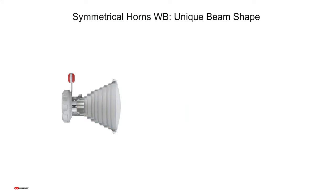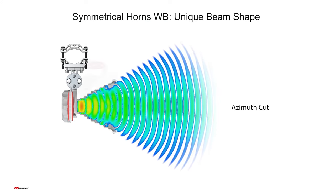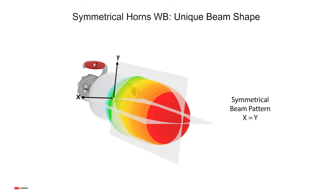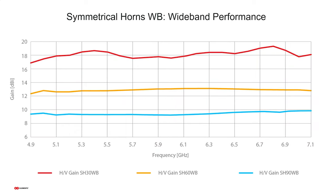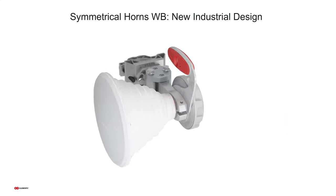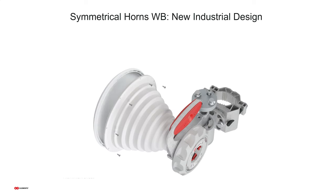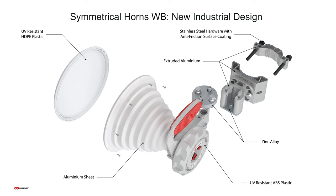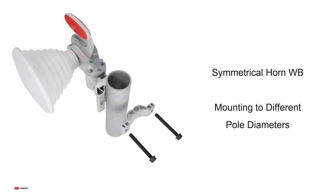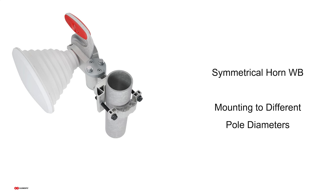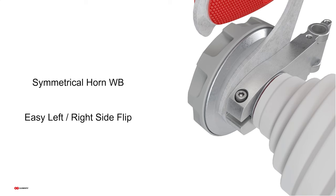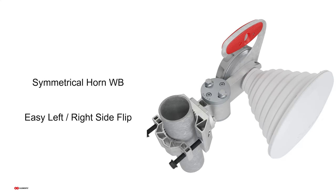The new Symmetrical Horn Wideband still has a very unique beam shape with the same elevation cut as in azimuth, giving a symmetrical beam pattern projected into the field. All new antennas have very flat gain across the entire usable spectrum from 4.9 to 7.1 GHz. The new industrial design incorporates a handle for easier tower transport, and integrates our UBR bracket system for better azimuth and elevation adjustments. The UBR bracket can be flipped for smaller or larger diameter poles.